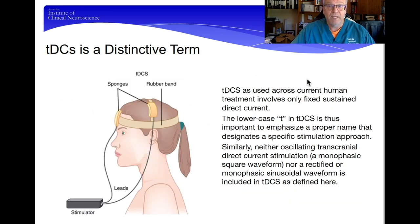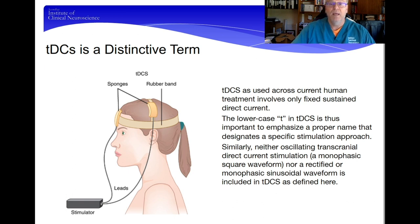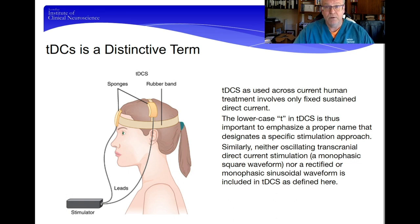The term tDCS — lowercase t, capital D, capital C, lowercase s — is a distinctive term used across all human treatments and human research. It involves only a fixed sustained direct current. The lowercase t is important to emphasize the proper name designating this specific stimulation approach. It doesn't use subdural electrode stimulation, alternating currents, or alternating monophasic square wave direct current. It is a continuous direct current across two electrodes for a specified time at a specified amperage.